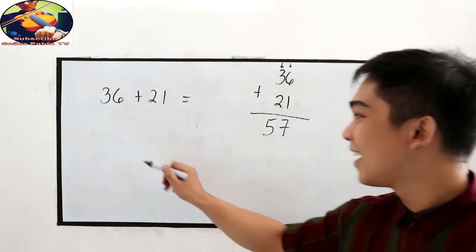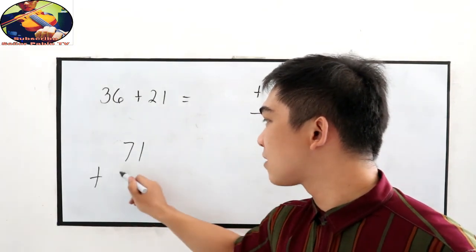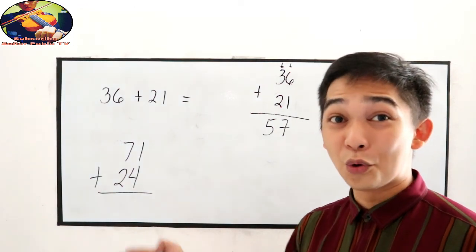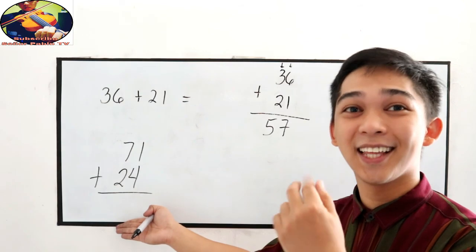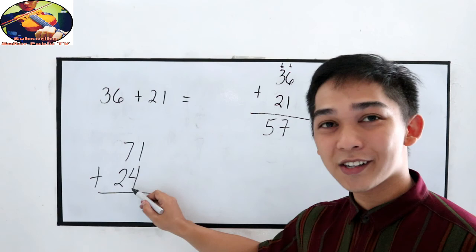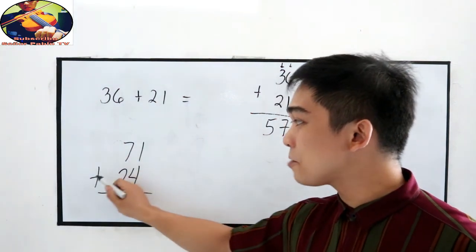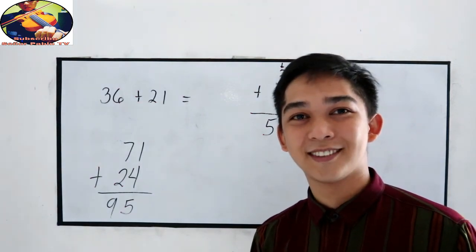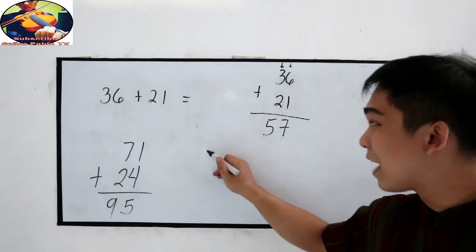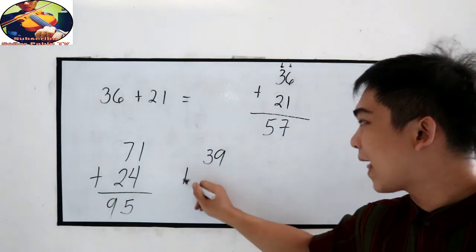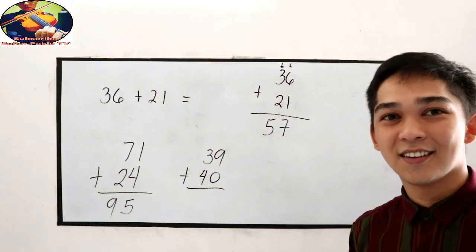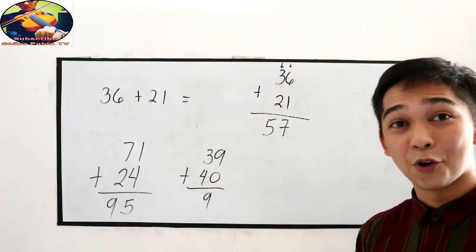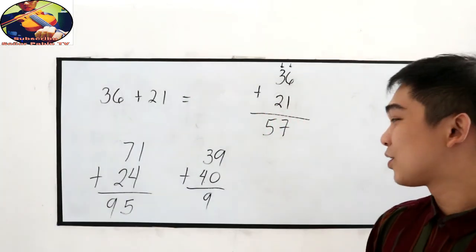What if we have 71 plus 24? Check the alignment. After checking the alignment, can you do it within 3 seconds? 3, 2, 1. So 1 plus 4 is 5. Then 7 plus 2: 8, 9. That is 9. So the answer is 95. Next, what if we have 39 plus 40? So 9 plus 0 is 9. Then 3 plus 4: 5, 6, 7. So the answer is 79.